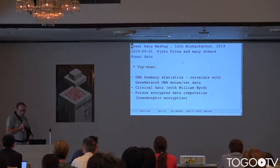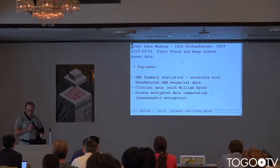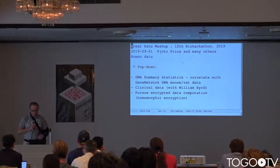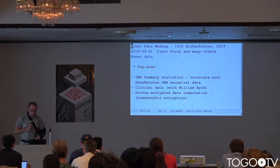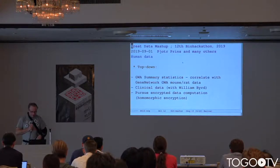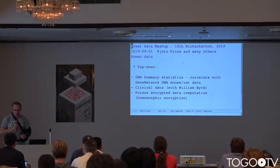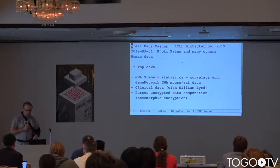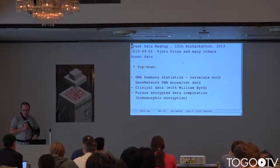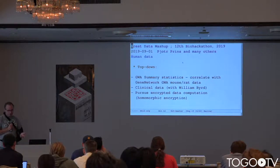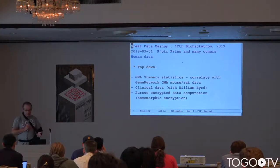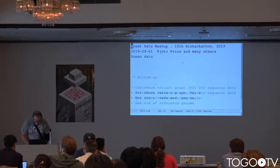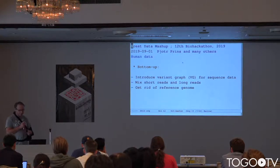Human data has its challenges. One approach these days is the use of summary statistics for genome-wide association studies. You can safely store these in a web service — if they get stolen, there's no risk of privacy issues. But it's not good enough, and we also want to work on clinical data — William Byrd is doing a lot there. We'd also like to pursue encrypted data computation, called homomorphic encryption, which means you can do GWAS analysis using encrypted rather than original data, and you can store that in a database without worrying about it being stolen.